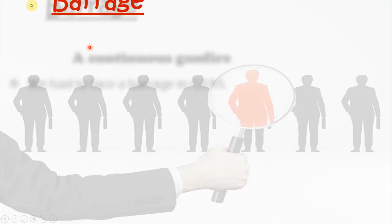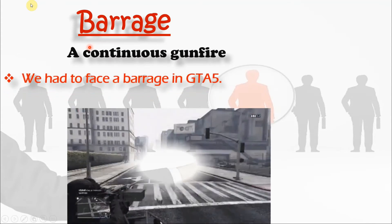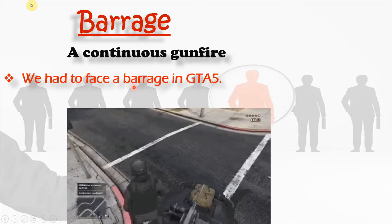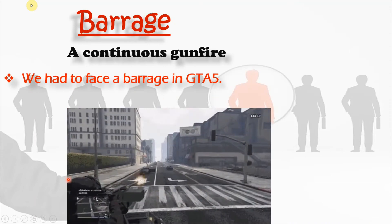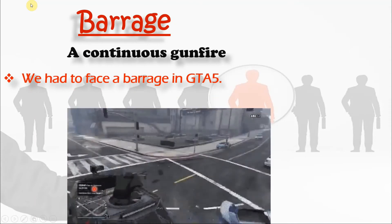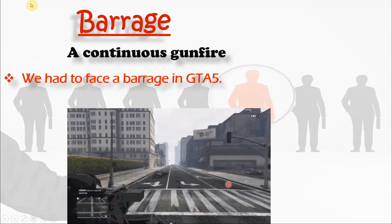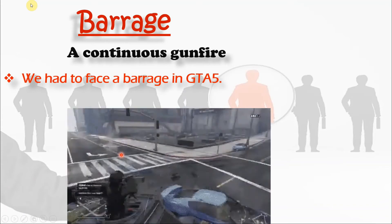The next word is barrage. Barrage means a continuous gunfire. This word is also important for your one word substitution. A sentence you can make: 'We have to face a barrage.' Whatever the person is doing, it is a barrage — it means a continuous gunfire.